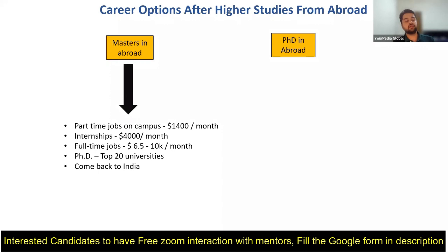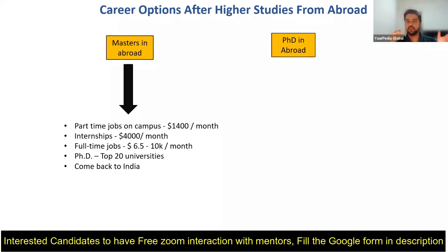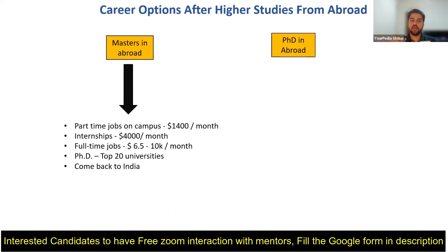Living in New York, the cost of living per month — if you're not living a lavish life — is around $1000 to $1200 per month. So you can survive on that part-time income, and whatever education loan you took, you pay the semester fees from that.